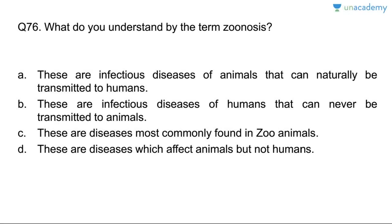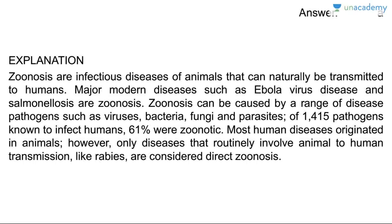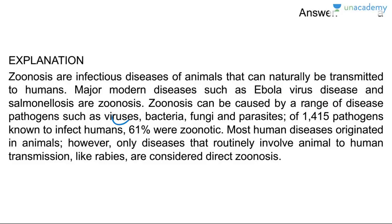Question seventy-six: what is zoonosis? Zoonoses are diseases found in animals that can be naturally transmitted to humans — 'zoo' means animal. Answer is A. Zoonoses are infectious diseases of animals that can naturally be transmitted to humans; examples include Ebola and salmonellosis. They can be caused by bacteria, viruses, fungi, and parasites. Of 1,415 pathogens known to infect humans, 61 percent were zoonotic.